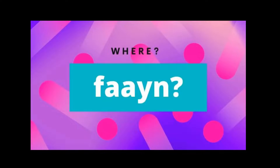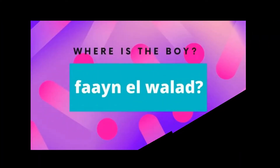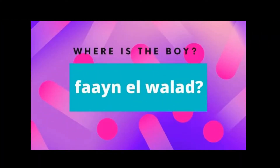Where — in Arabic we say 'fein', and at times you might hear it as 'ween'. So 'fein' or 'ween' means where. If you want to say 'where is the boy', you say 'fein il walad'. You can change 'the boy' and replace it with any noun you are searching for. Where is the boy — fein il walad.